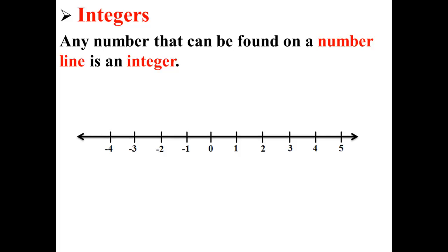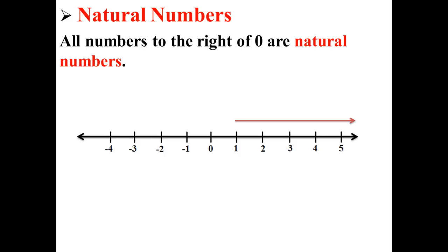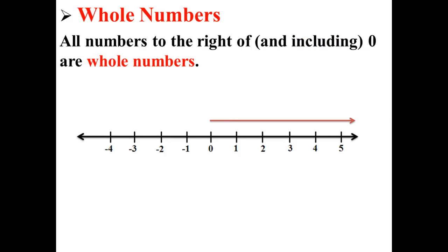Here we have a number line. All the numbers like 0, 2, 3, 4, 5 are integers. Now natural numbers are numbers to the right of 0, for example 1, 2, 3, 4, 5, 6, 7, continuing on and on. Those are natural numbers.